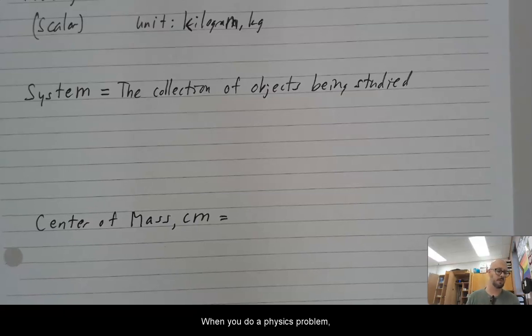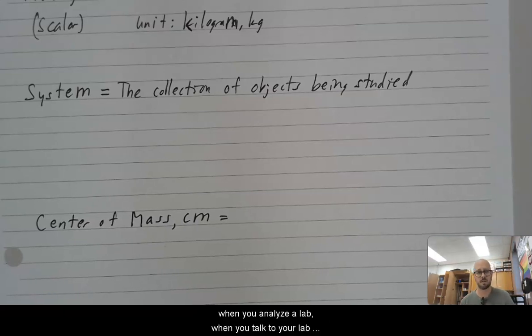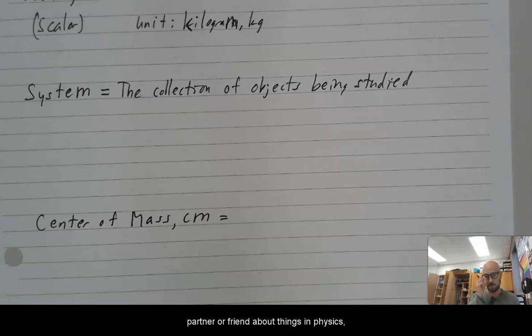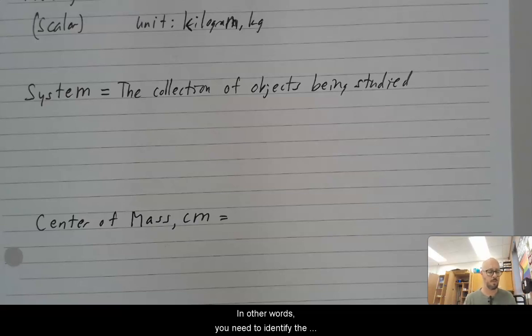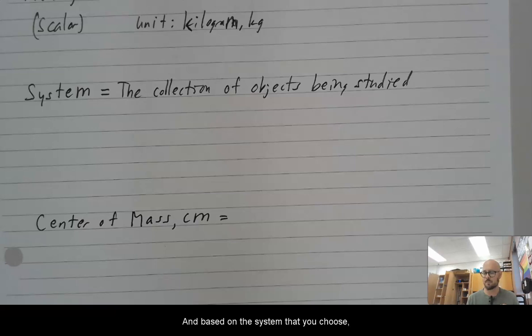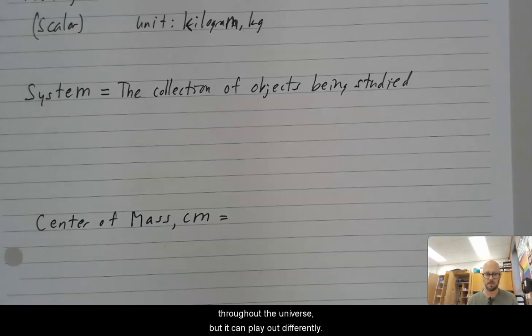When you do a physics problem, when you analyze a lab, when you talk to your lab partner or friend about things in physics, you need to define the system. In other words, you need to identify the objects that you are going to analyze. And based on the system that you choose, the physics works out a little differently. Now it has to be consistent throughout the universe, but it can play out differently.